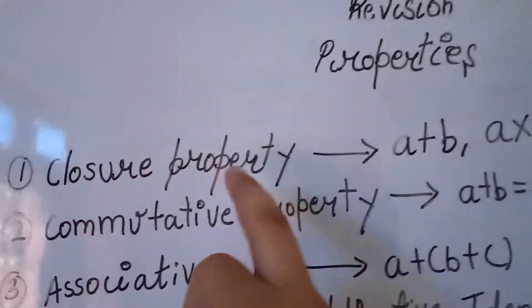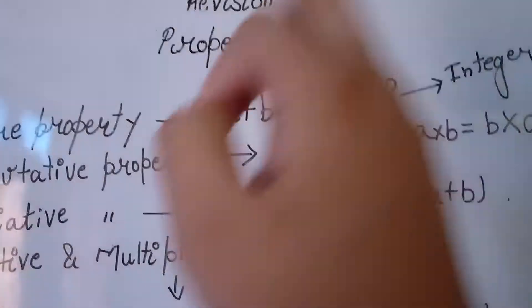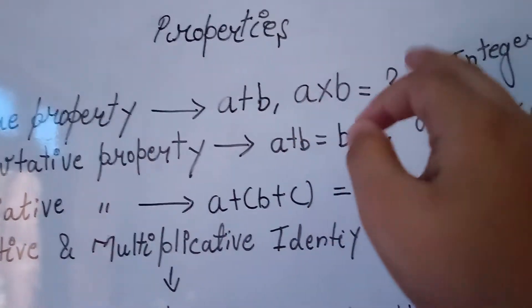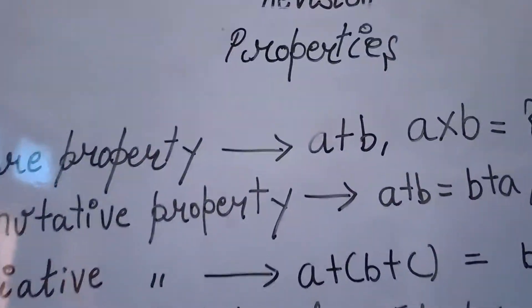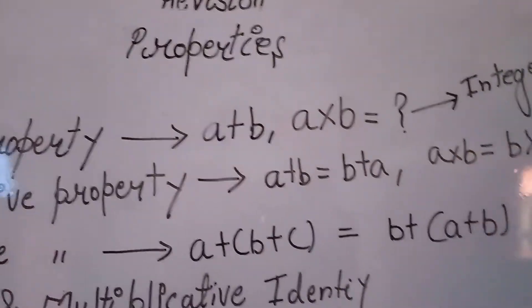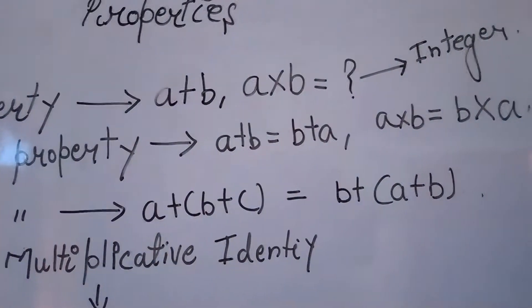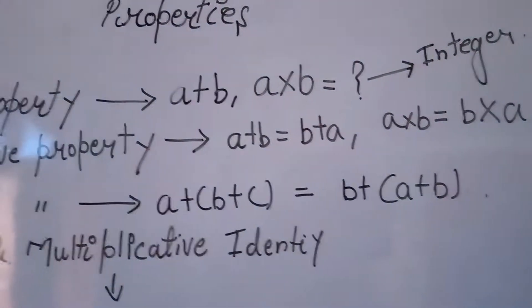Number 1 is closure property. Let's understand with example: a plus b, a into b is equal to integer. Means if a is equal to integer and b is equal to integer, then its sum and multiplication and even the subtraction will be integer.